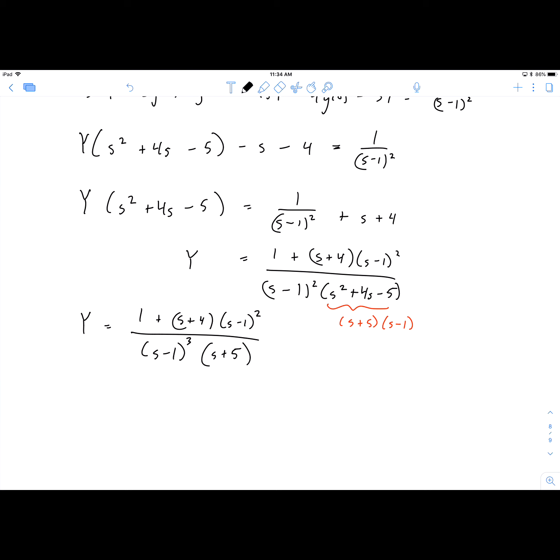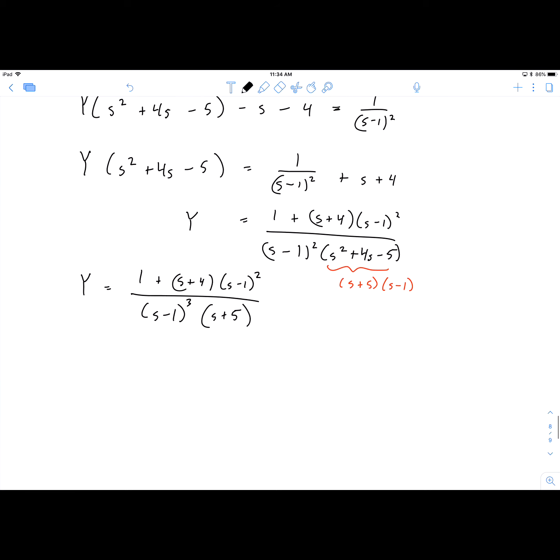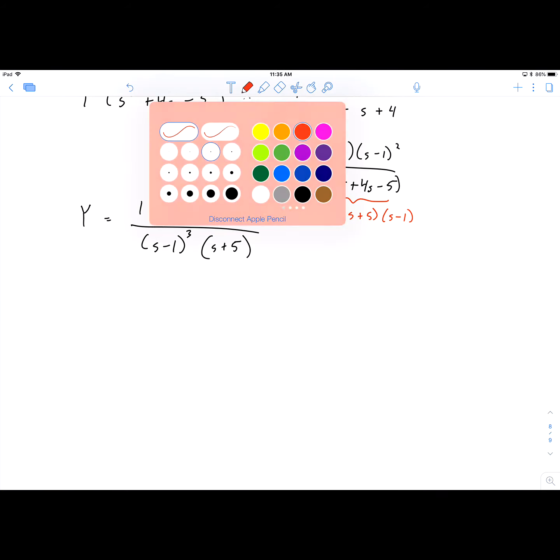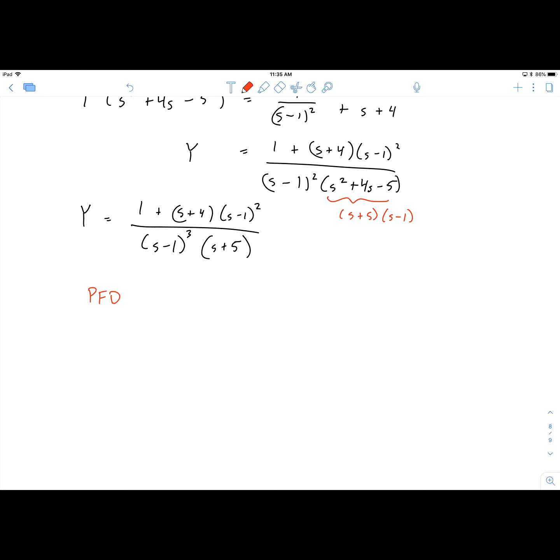To do the partial fraction problem on this, we need to break down this denominator. It's already factored, but notice that we have a repeated factor here. So if you remember, the way we handle a repeated factor is that we'll get one term for (s-1), then one for (s-1)², and then one for (s-1)³.